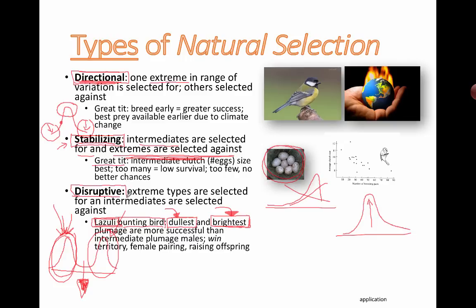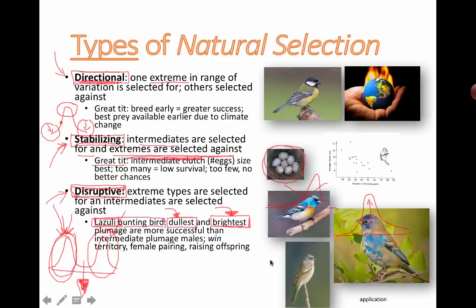So that's an example of disruptive selection. Think of human behaviors that are directional, stabilizing, and disruptive. Here's the lazuli bunting bird: the fancy one and the dull one. That is types of natural selection.